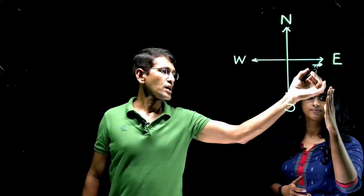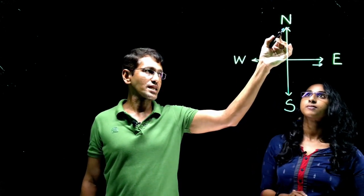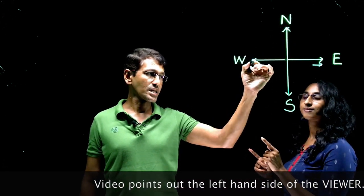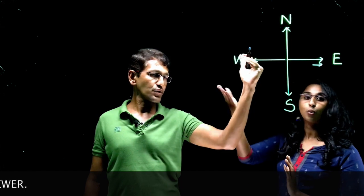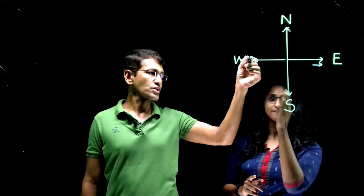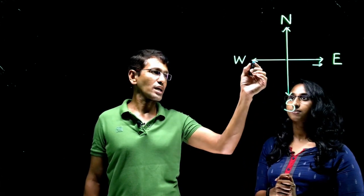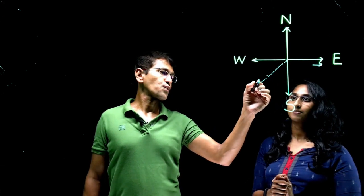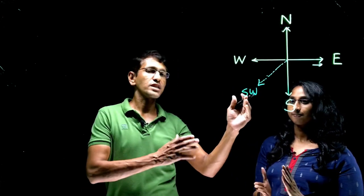Shilpa started facing East, turned 270 degrees clockwise to reach North, then takes a left turn — a 90-degree turn — which brings her to face West. From West, she then turns 45 degrees anti-clockwise. From West to South is 90 degrees, so 45 degrees is halfway. Now Shilpa is facing the direction between West and South, which is Southwest. So Shilpa is facing Southwest.